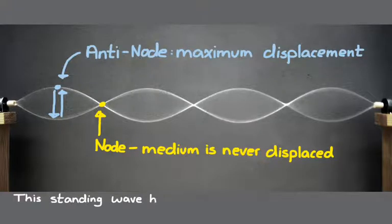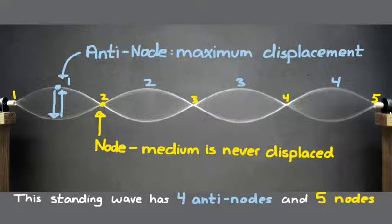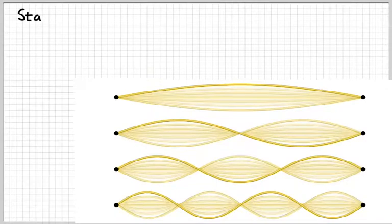If we count the anti-nodes in that example there are four of them, and if we count the nodes there are five. The ends of the string count as nodes because that's where the medium is not moving. We need to look at a standing wave, identify how many nodes or anti-nodes it has, understand how many wavelengths there are, and relate that to the length of the string.